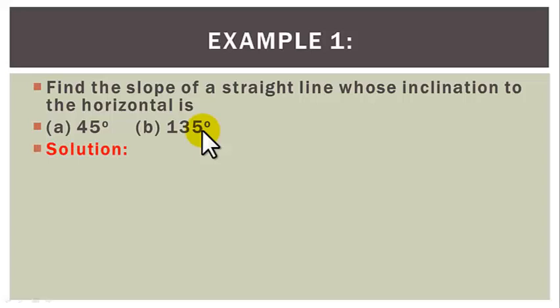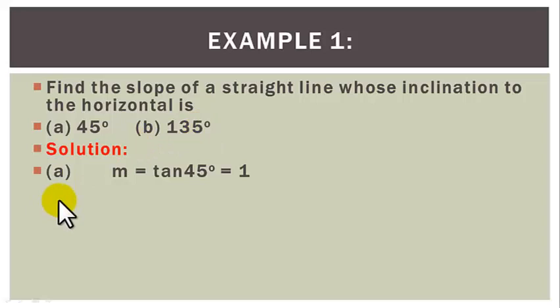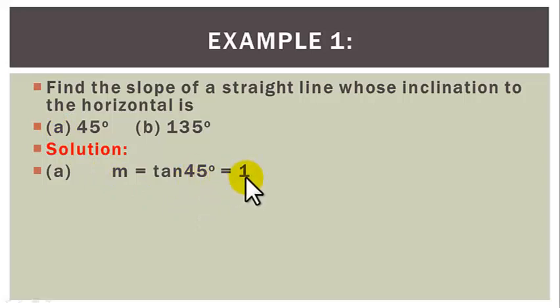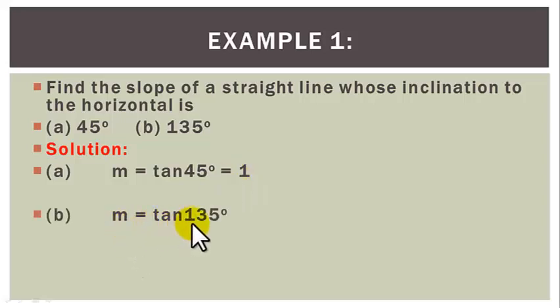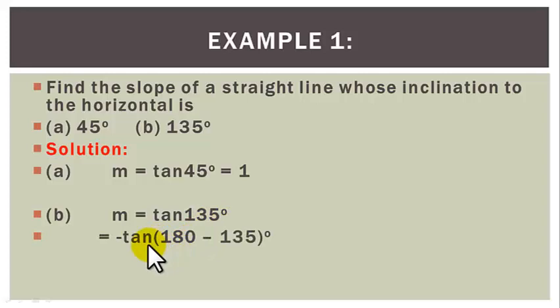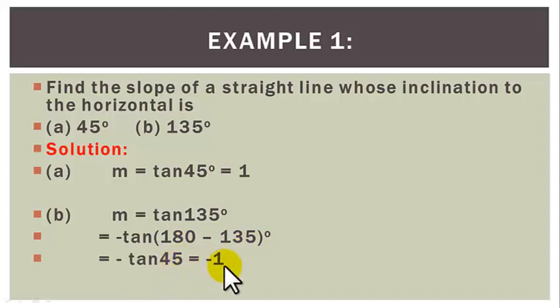Solution. A. We recall that the slope of a straight line that makes an angle of theta with the horizontal is tan theta. So for A, the slope m is equal to tan 45 degrees, and tan 45 degrees is equal to 1. B. m equals tan 135 degrees, and tan 135 is equal to minus tan of (180 minus 135), which is equal to minus tan 45, and that gives us minus 1.